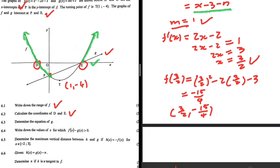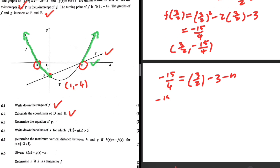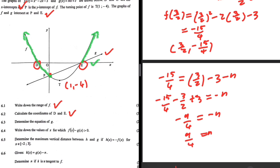The point (3/2, -15/4) lies on k(x), so we substitute into k(x) = x - 3 - n: -15/4 = 3/2 - 3 - n. Solving: -15/4 - 3/2 + 3 = -n, which gives -9/4 = -n, so n = 9/4.